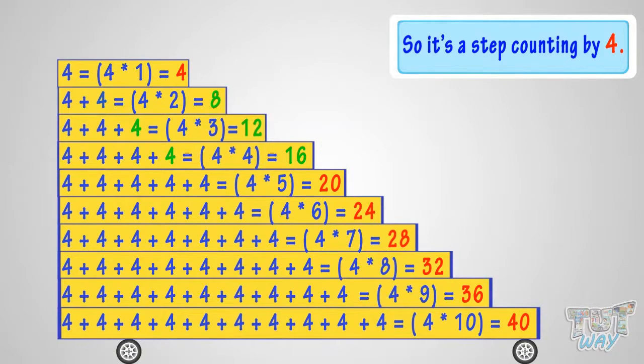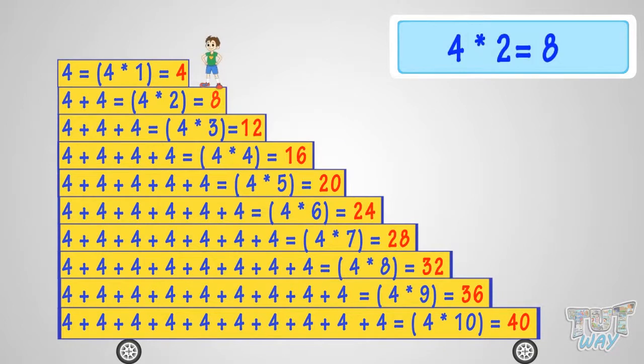So, let's revise what we learnt. Four times one, four. Four times two, eight. Four times three, twelve. Four times six, twenty-four. Four times seven, twenty-eight. Four times eight, thirty-two. Four times nine, thirty-six. Four times ten, forty.